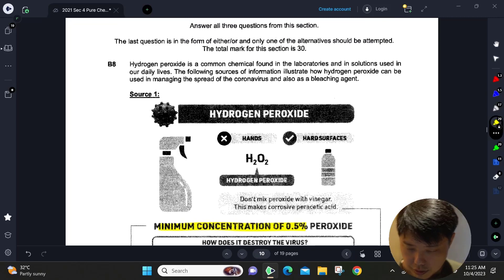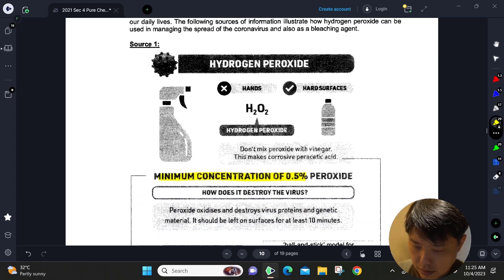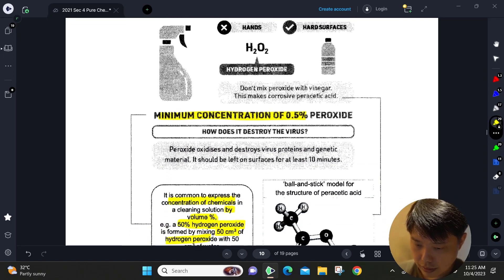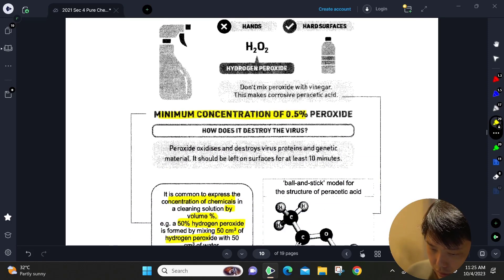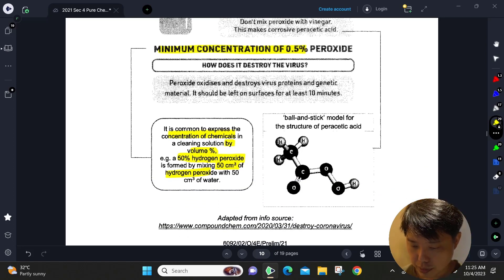Alright, let's look at Question 8 from Section B. This question is about hydrogen peroxide. We are told that for the solution to be effective to destroy coronavirus, we need a minimum concentration of 0.5 percent. How do we calculate the percentage? It is basically by volume, so if 0.5 percent hydrogen peroxide is required, we will need to have 0.5 cm³ in 100 cm³ of solution.